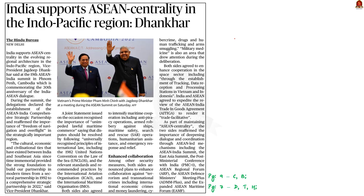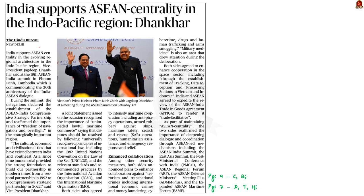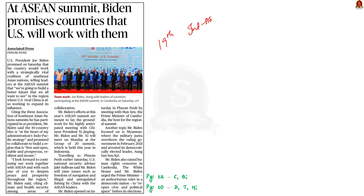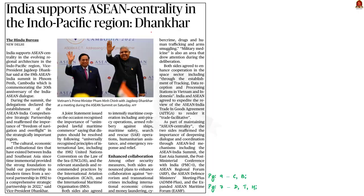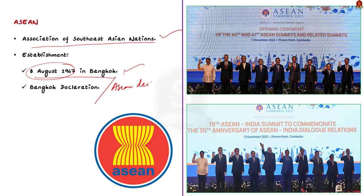The next articles are about the 19th ASEAN-India Summit. In the summit, delegations declared the establishment of ASEAN-India Comprehensive Strategic Partnership and reaffirmed the importance of freedom of navigation and overflight. A second article says that at the ASEAN summit, the US said it will work with this strategically vital coalition of Southeast Asian nations. In this context, we are going to learn about ASEAN in a prelims perspective.